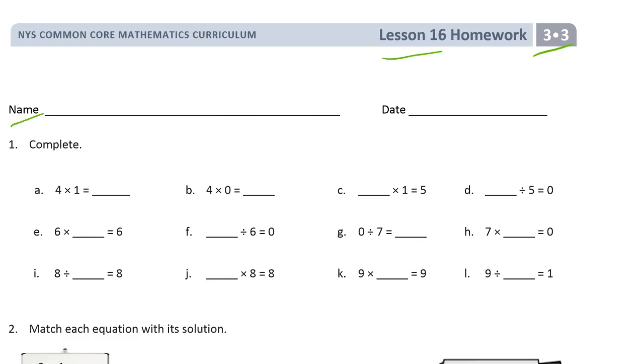Get your name on here first before you forget to do it later. And we're just completing these equations. Now some of these will have missing factors or missing divisors. They might have a missing quotient or they could have a missing dividend. We just have to pay attention to the multiplication and division symbols and the equal signs.